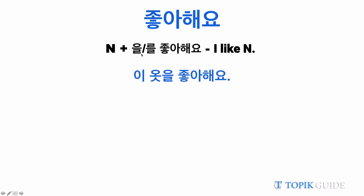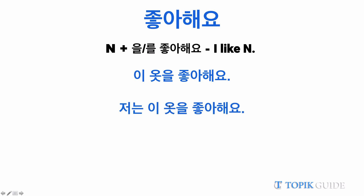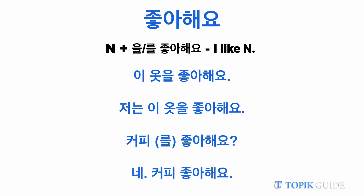Let's see some sentences: 'ee osil chawayo.' The sentences are exactly the same as we saw with chawayo, but the difference is that here we are using 'il' instead of 'ee,' and here it simply means 'I like this dress' — not 'this dress is good.' Here also 'chawanan' is hidden, so 'chawanan ee osil chawayo' and 'ee osil chawayo' mean the same thing. Again, if someone asks 'koppi chawayo,' they are simply asking if you like coffee, and you can say 'nay, koppi chawayo' — yes, I like coffee.